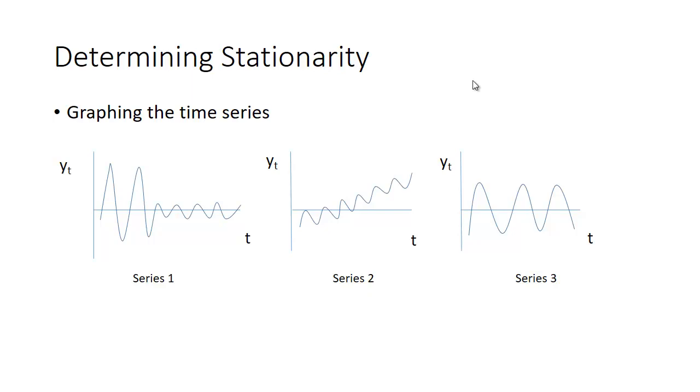And then in the case of Series 3, it seems to have a constant mean, seems to have a constant variance, but it seems to exhibit some seasonality. It seems to have this pattern where it goes up and then it goes down and it goes up and it goes down, and that may also be the case for Series 2 as well.